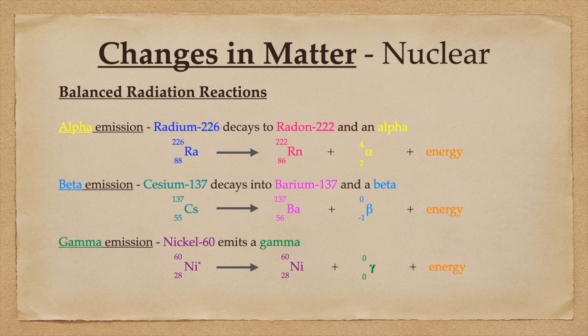So it doesn't actually change the identity of the nucleus. If a nickel-60 emits a gamma, it's still a nickel-60, it's just a lower energy nickel-60. So we often show that as a star as the reactant, saying this is a high energy nickel nucleus.